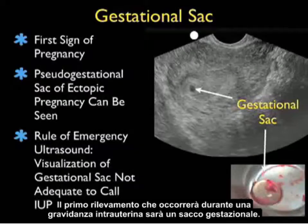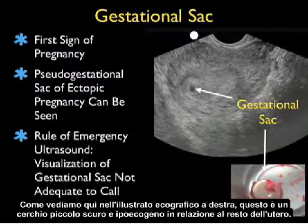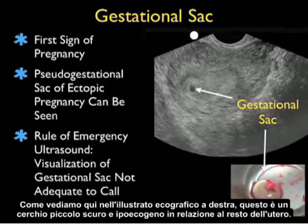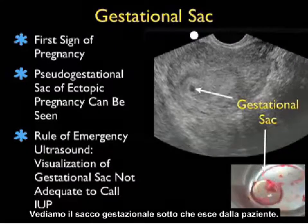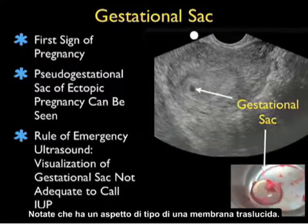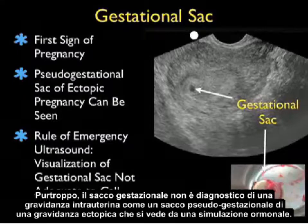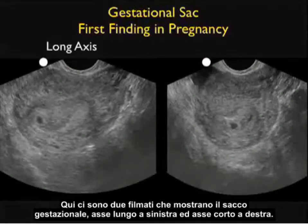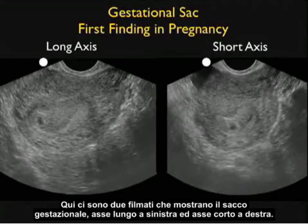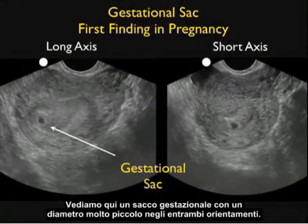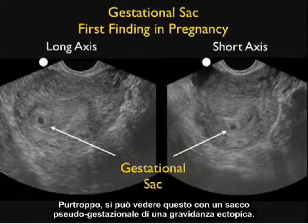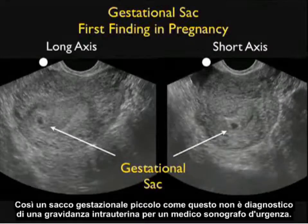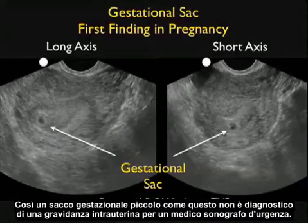The first finding during an intrauterine pregnancy is the gestational sac — a small round, dark or hypoechoic circle relative to the rest of the uterus. We also see an actual gestational sac specimen, which has a translucent membrane-type appearance. Importantly, a gestational sac alone is not diagnostic of an intrauterine pregnancy, as a pseudo-gestational sac of ectopic pregnancy can appear from hormonal stimulation. Video clips show the gestational sac in long axis and short axis — a small diameter sac like this is in no way diagnostic of an IUP for the emergency physician sonographer.